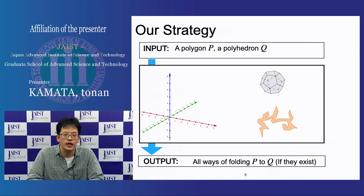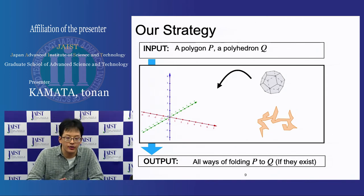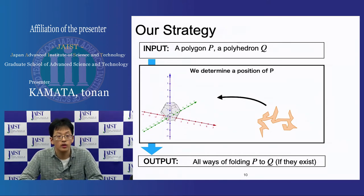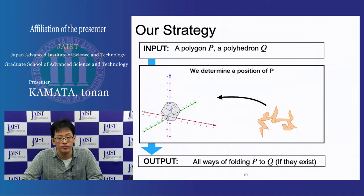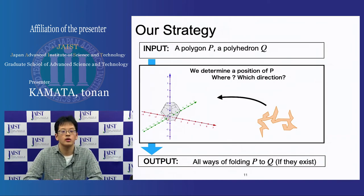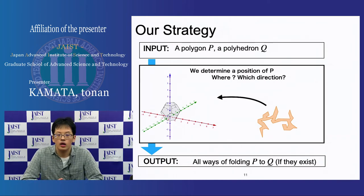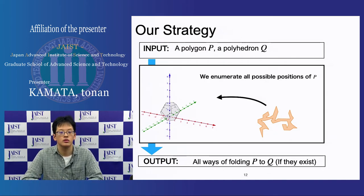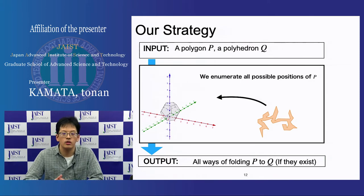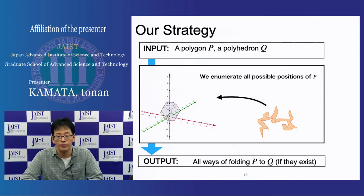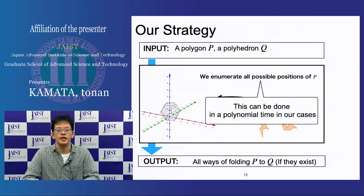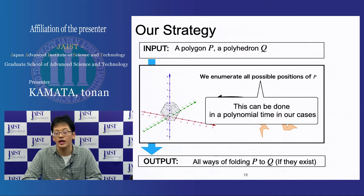I explain more specifically. In 3D coordinates, fix the polyhedron. To fix the polygon, we determine the position of the polygon. Here we have two issues: where and which direction. So we enumerate all possible positions of the polygon. The key point is that this can be done in polynomial time in our cases.